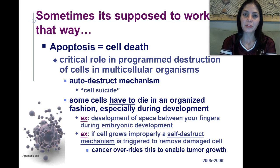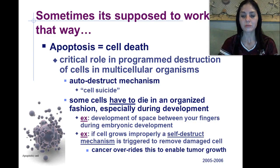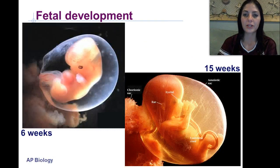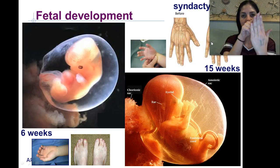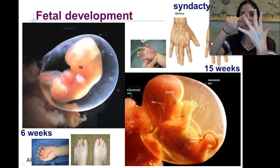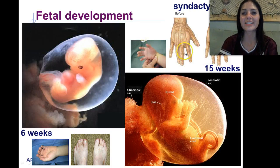However, an example of that mechanism not working is when cancer overrides it and enables a tumor to grow — tumors are just unchecked growth of cells. When programmed cell death doesn't occur to form the spaces between fingers, the condition is called syndactyly.